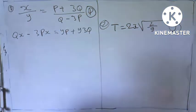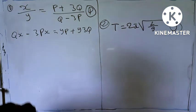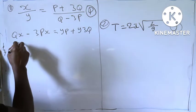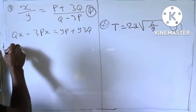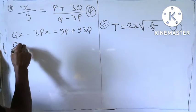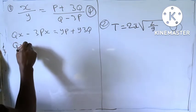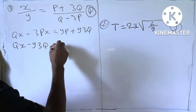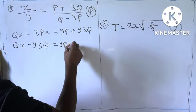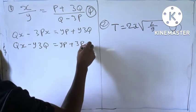So we are asked to make q the subject of the formula. So let's collect like terms by bringing this one here. So we have qx minus y3q equal to yp plus 3px.